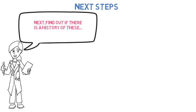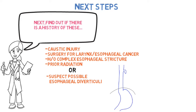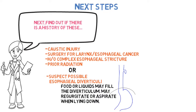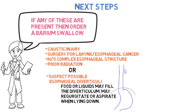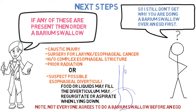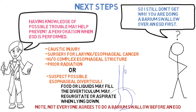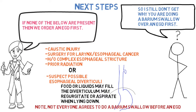Next, find out if there is a history of caustic injury, surgery for larynx or esophageal cancer, complex esophageal stricture, prior radiation, or suspected esophageal diverticuli. With a diverticulum, food or liquids may fill it and the patient may regurgitate or aspirate when lying down. If any of these are present, order a barium swallow first — not everyone agrees to do a barium swallow before an EGD. The thinking is that blind intubation of the proximal esophagus may cause perforation; knowing about possible trouble may help prevent it.